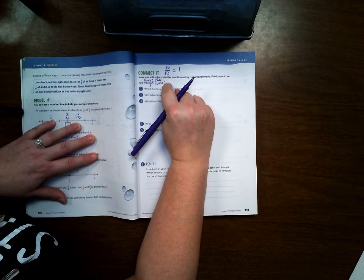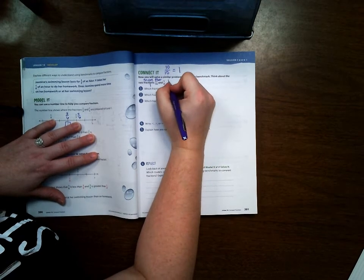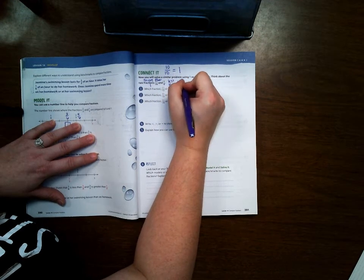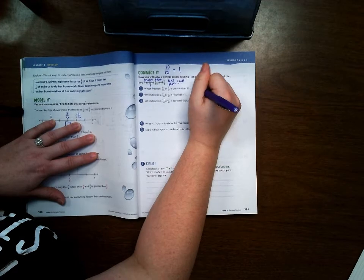But over here, seven is less than eight. So that means that this is less than one whole. So that means eleven-tenths is bigger.